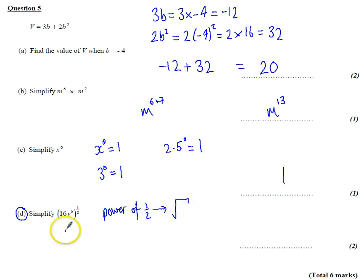So I'm going to find the square root of 16, which is 4. I should think of this as 16 to the power of 1/2, which is the square root of 16, which is 4. And then I'm going to find y to the power of 6 and find the power of 1/2 of that.